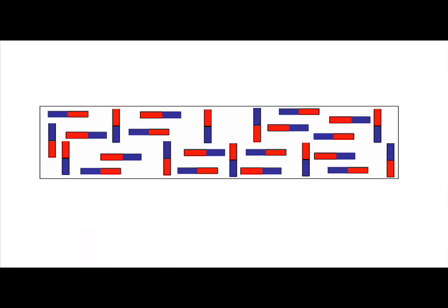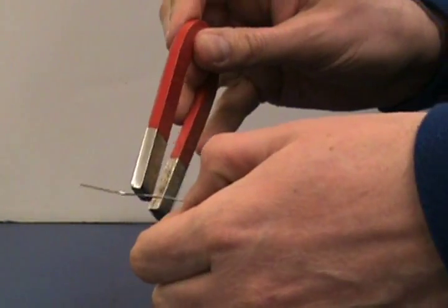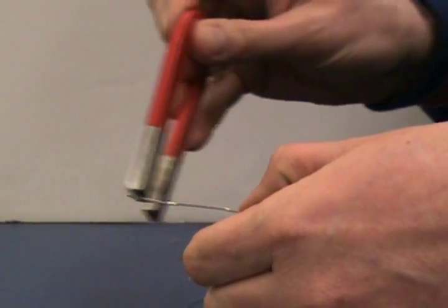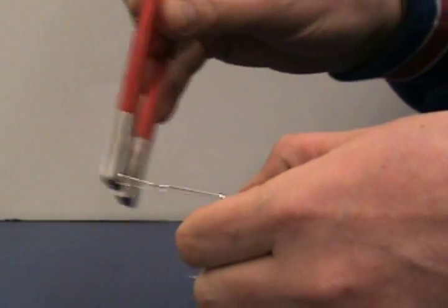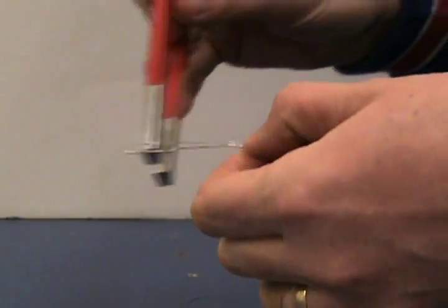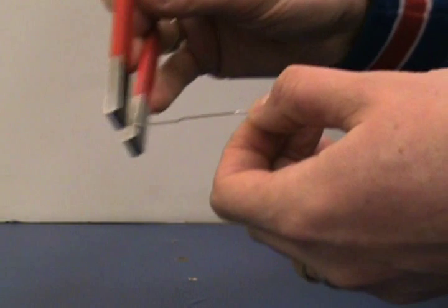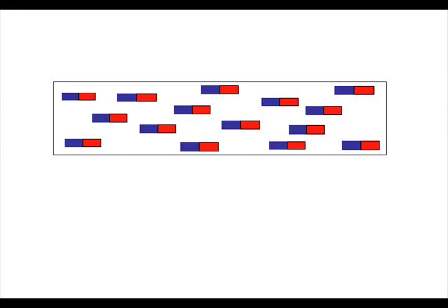Inside any piece of metal are little mini magnets called domains that are all mixed up. When we take a paper clip and rub it with a magnet over and over in the same direction, all of the domains line up and point in the same direction, which makes it a magnet.